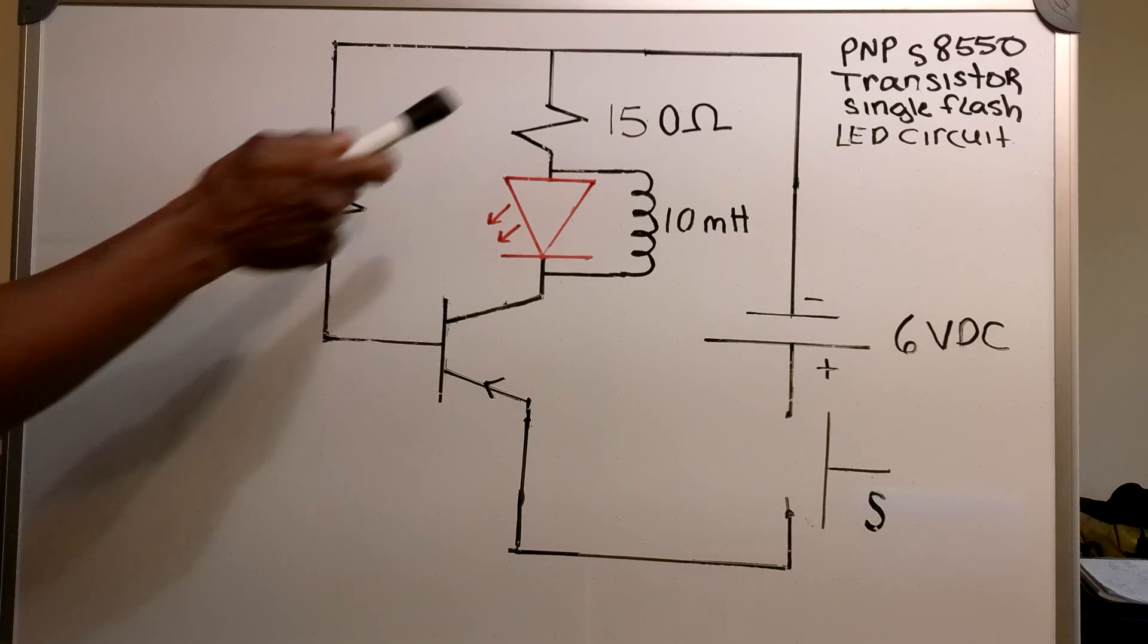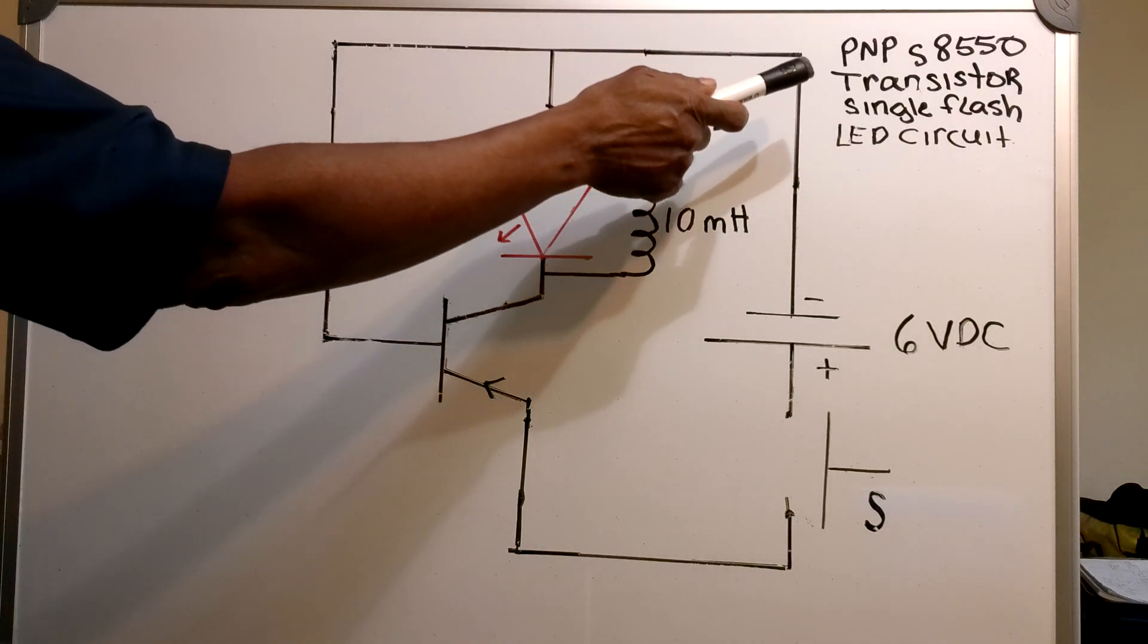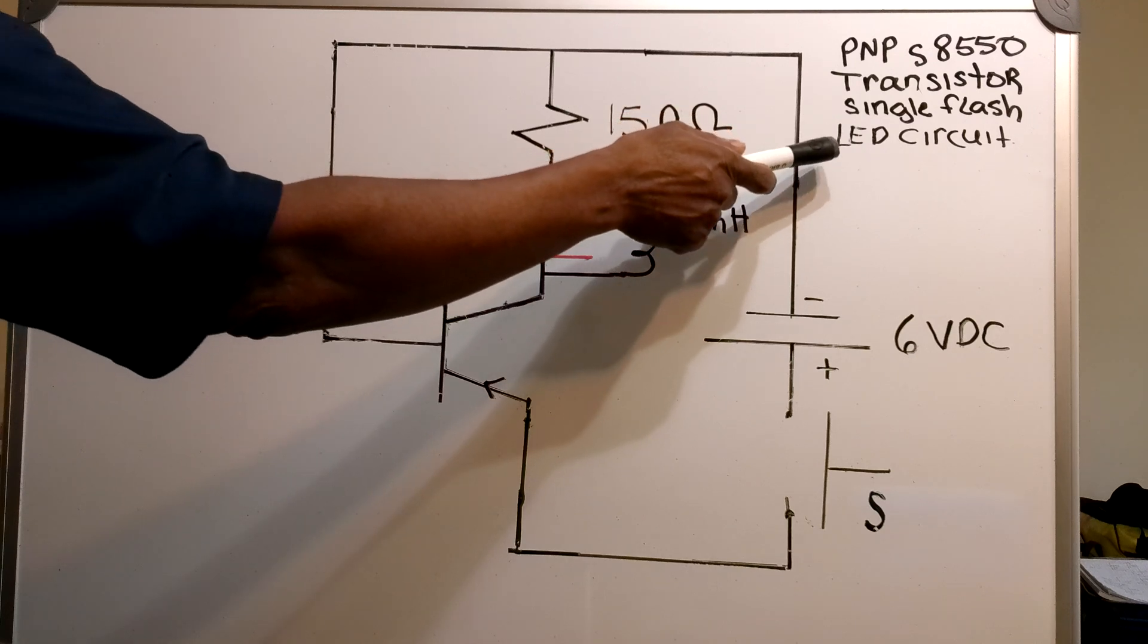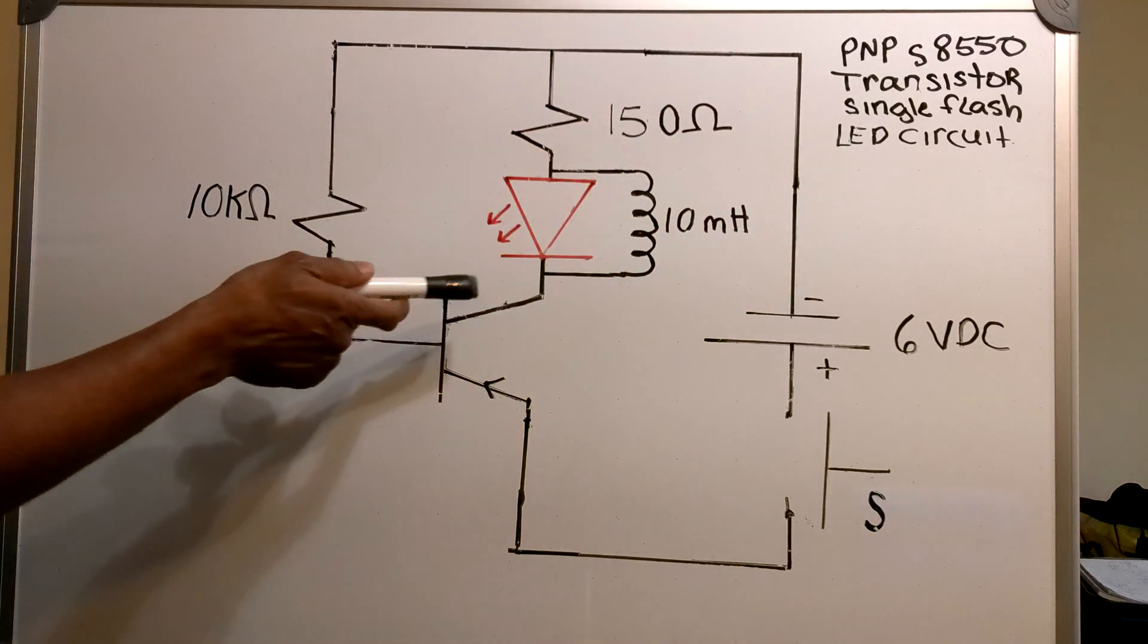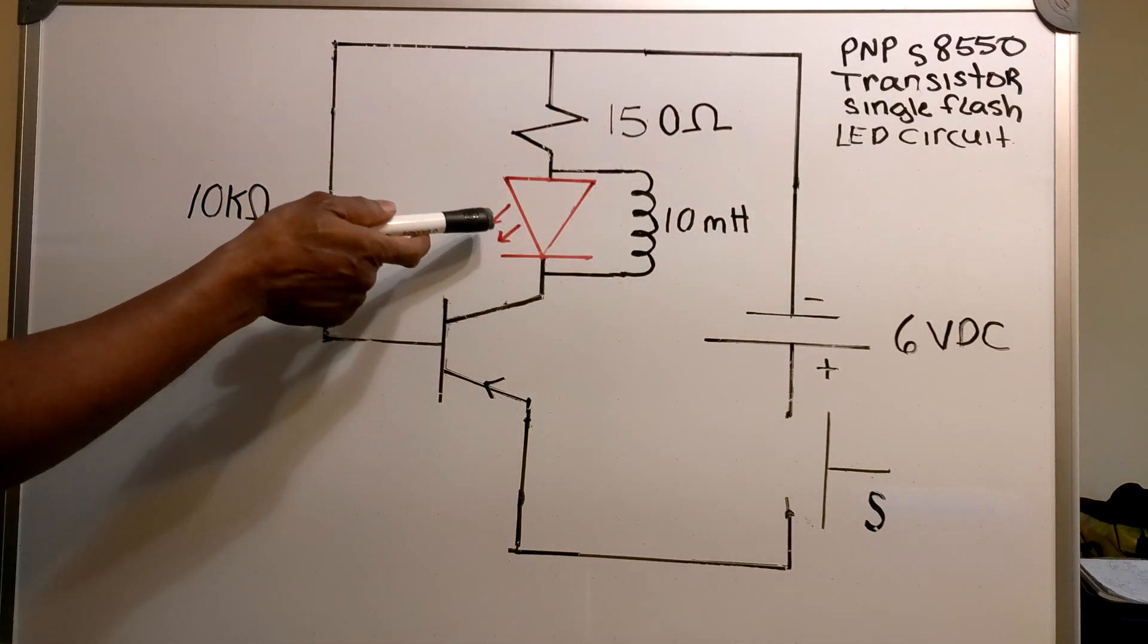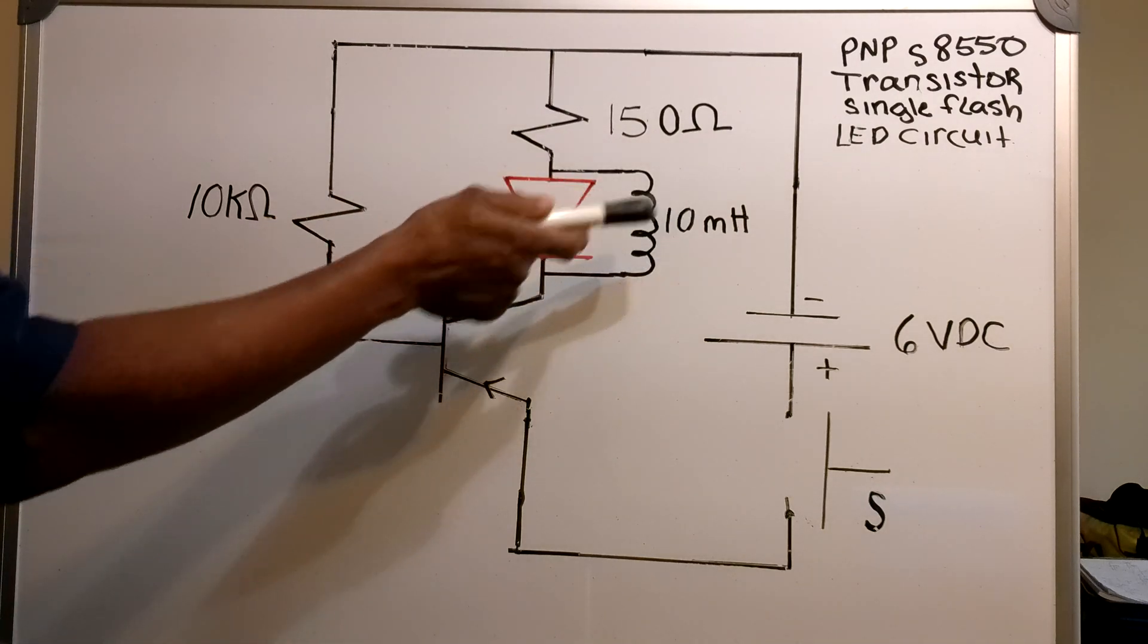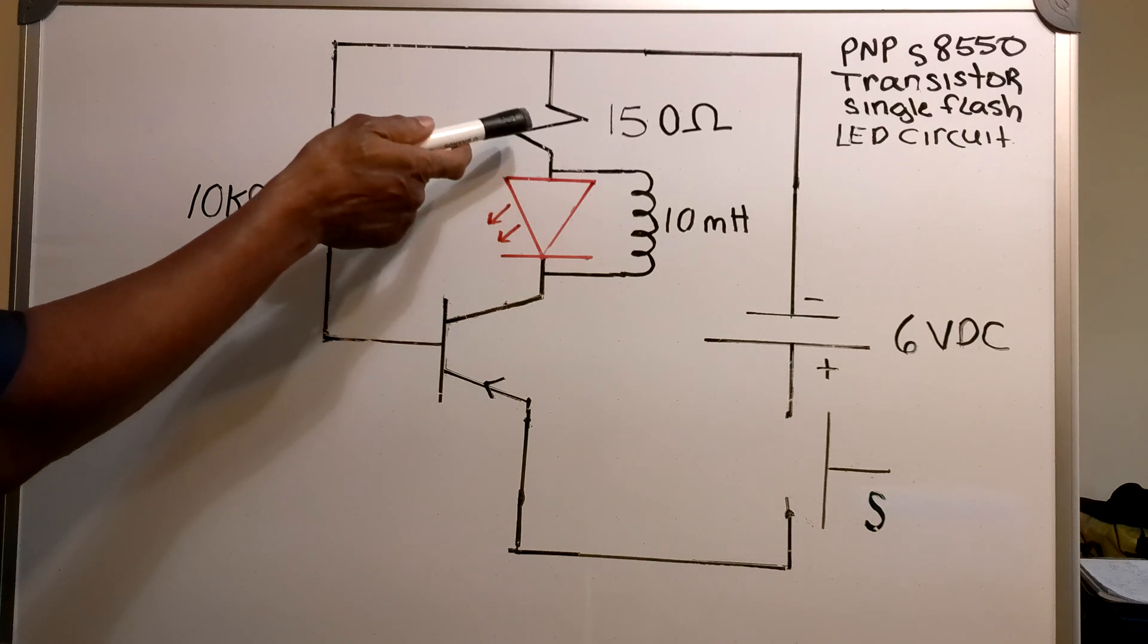Now in this video I've got the PNP S8550 transistor single flash LED circuit. On the collector side of the transistor I've got a 2 volt red LED in parallel with a 10 millihenry inductor in series with a 150 ohm resistor.